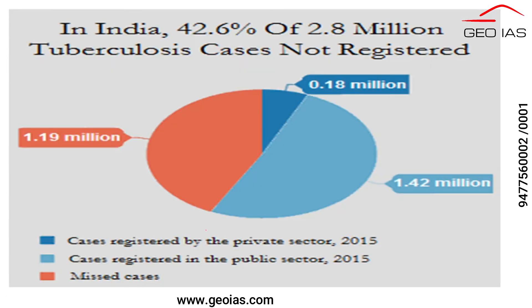Let us move further for the main discussion and understand government schemes. Why does the Government of India have to focus? One important thing is that according to WHO, 42.6 percent of cases are not registered in India. Also, according to the Disease Burden Report of WHO, India is witnessing almost the highest burden of TB cases in the world.